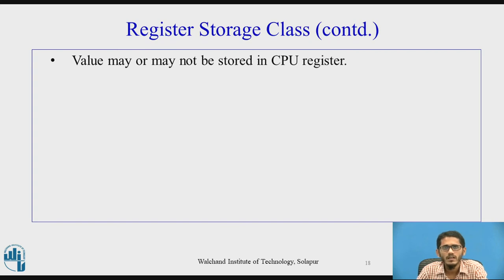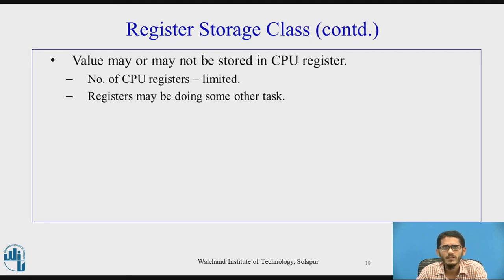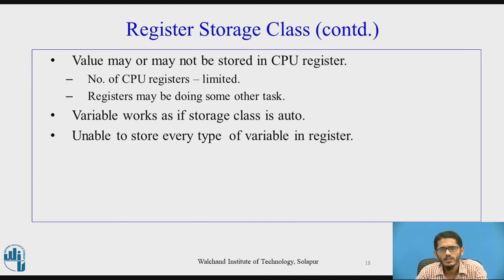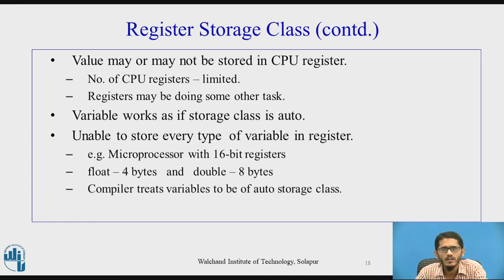When a variable is declared using register storage class, it may or may not actually be stored in a CPU register. One reason is that the number of registers in a machine is limited, or a particular register may not be available. Another reason is the register may be doing some other task. In such cases, the variable works as if the storage class is auto. Additionally, not every data type can be stored in a register — for example, on microprocessors with 16-bit registers, float (4 bytes) and double (8 bytes) variables cannot be stored in registers, so the compiler treats them as auto storage class.